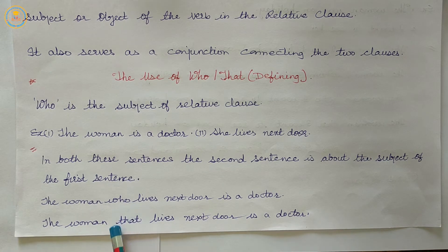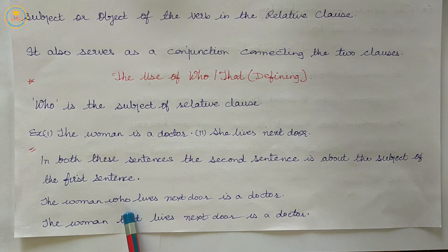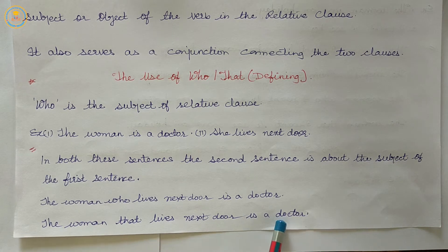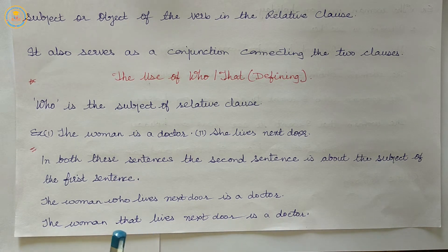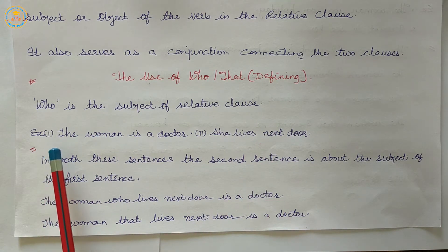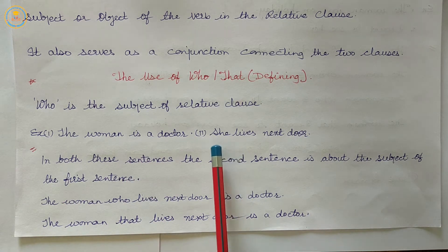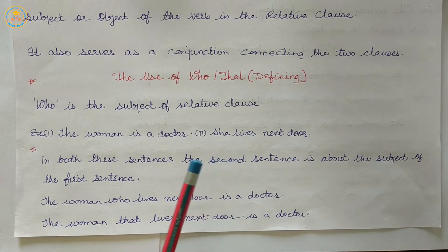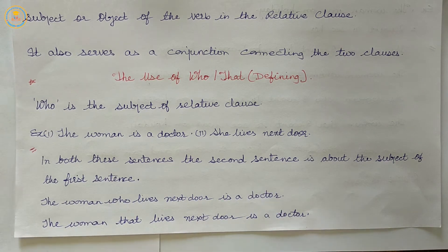We can use 'that' in place of who, whom, or which in a defining clause. So the sentence will be: 'the woman that lives next door is a doctor.' To summarize the use of who or that in defining clause: first sentence — the woman is a doctor; second — she lives next door. The second sentence is about the subject of the first, so: 'the woman who lives next door is a doctor' or 'the woman that lives next door is a doctor.'